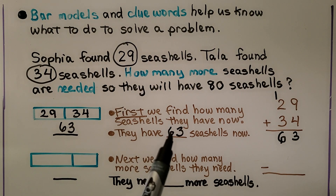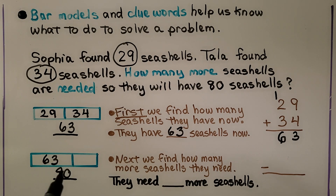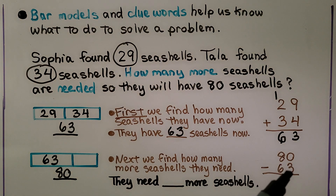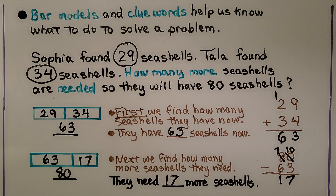Now that we know they have 63, we can figure out how many are needed for them to have 80. The whole amount is 80; we know one part is 63 and we're missing another part, so we can use subtraction. We subtract 80 minus 63. We need to regroup from the tens place: 8 tens becomes 7 tens, giving 10 ones. 10 minus 3 ones is 7 ones; 7 tens minus 6 tens is 1 ten. Our missing part is 17, which means they need 17 more seashells to have 80.